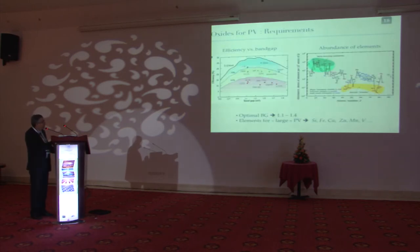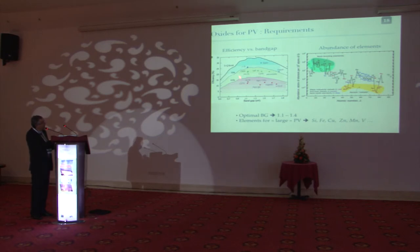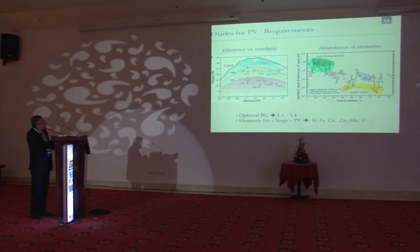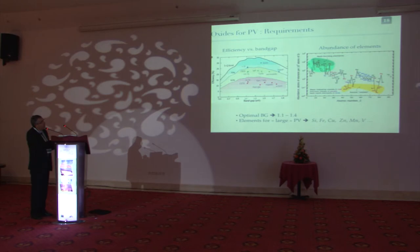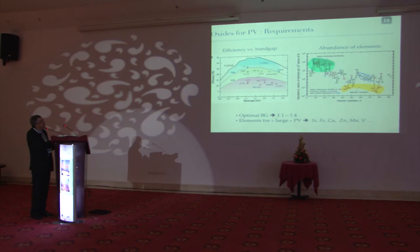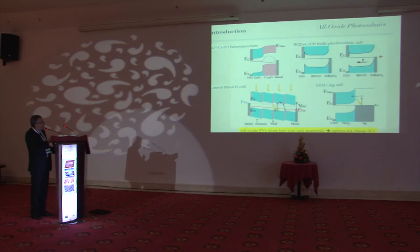Now moving to the second part of the talk: oxide absorbers for PV. What we are looking for are oxides with bandgaps in the range where efficiency is highest. We also want oxides composed of abundant elements — such as silicon, iron, copper, zinc, magnesium, and others. These two requirements — appropriate bandgap and earth-abundance — should be the goal for low-cost, scalable solar cells.